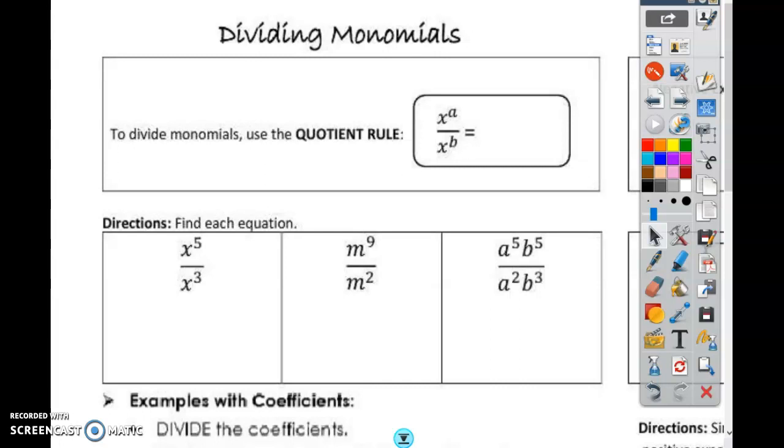Okay, we're continuing with laws of exponents. Today we're doing division and negatives. So we're going to start with division, which is really easy, so just pay attention. When you are dividing, you are really subtracting the exponents. So it's x to the power of a minus b. You're just going to subtract this minus this, and that'll give you the answer. Se restan.